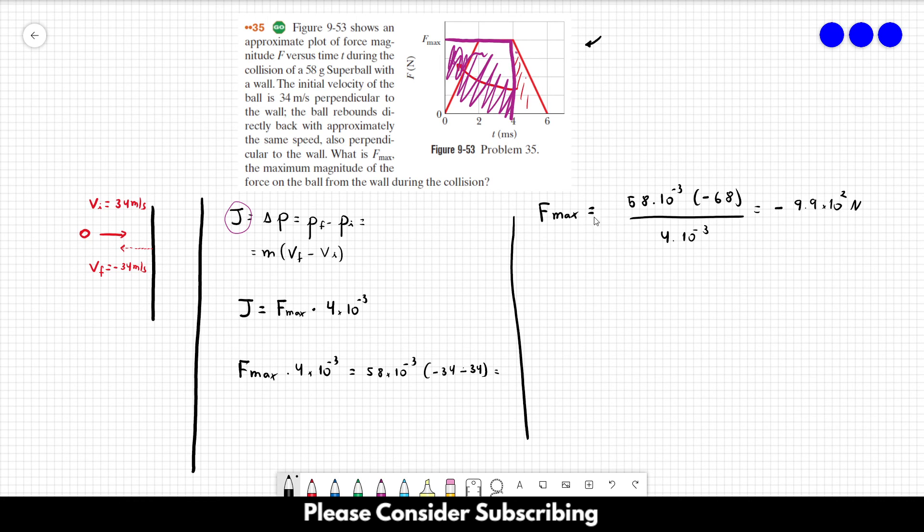Look, we have a negative sign over here. That's why we said that our final velocity was negative and our initial was positive. However, you can see that this is positive.